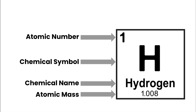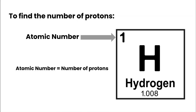On the periodic table entry we also have the chemical symbol — H here — underneath that the chemical name hydrogen, and then finally the atomic mass of 1.008. Every element has a specific mass, and that's going to be really helpful for figuring out the number of protons, neutrons, and electrons. To find the number of protons, the atomic number is equal to the number of protons in an atom.